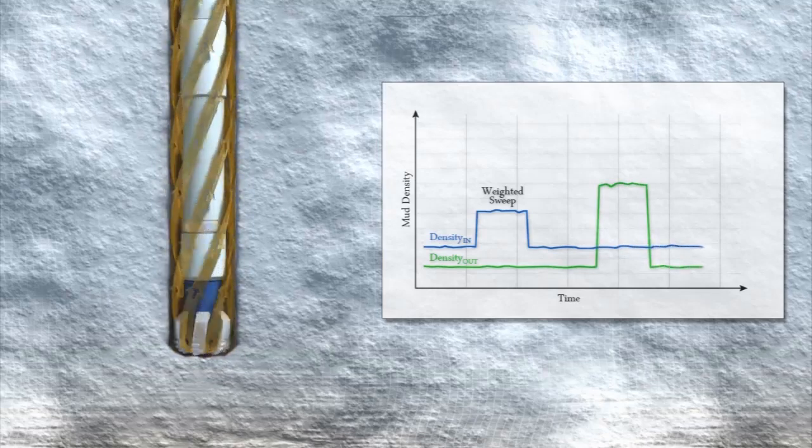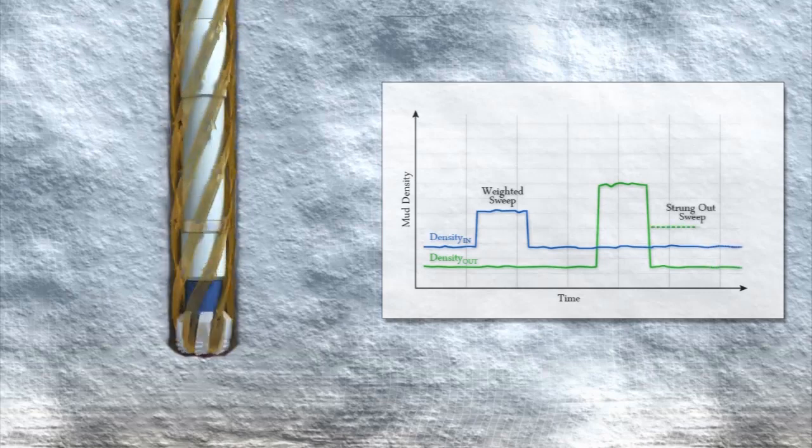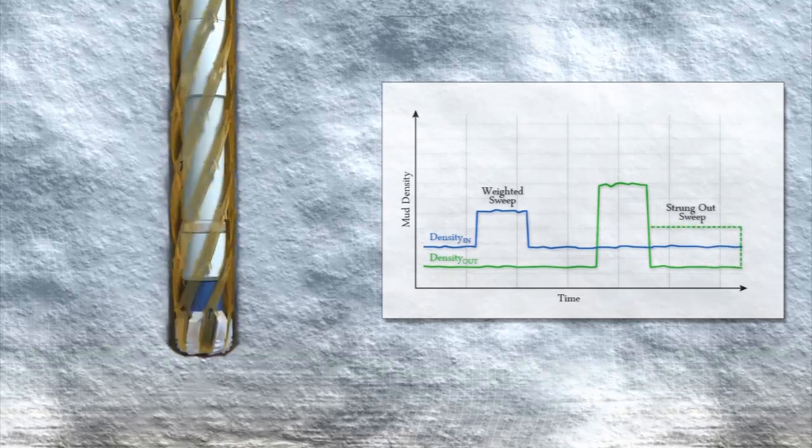Trend characteristics of the return density could also be an indicator of sloughing or that the sweep has been strung out.